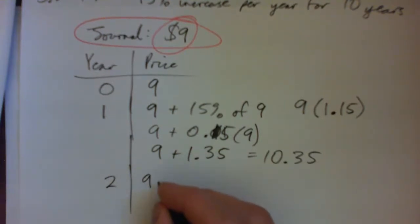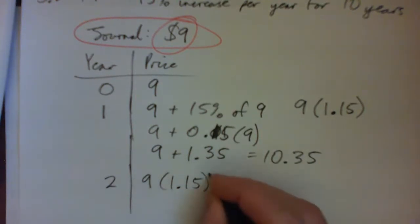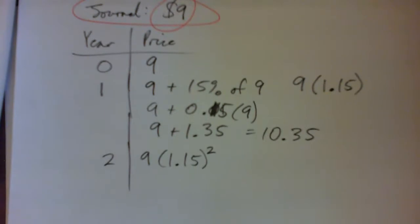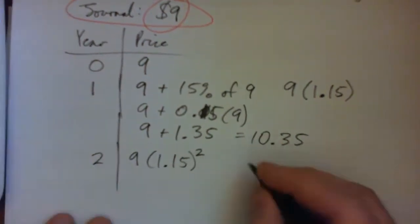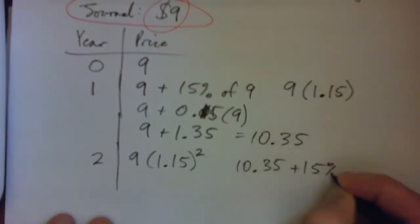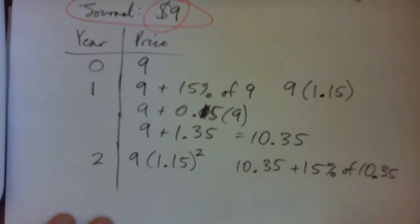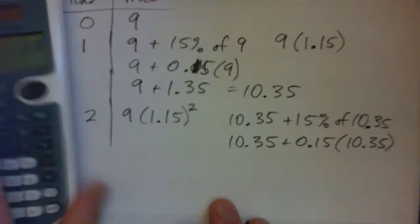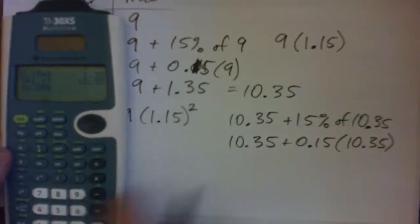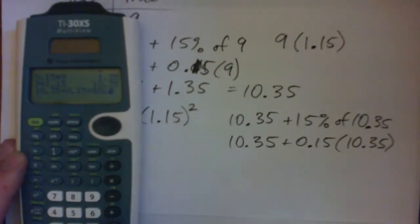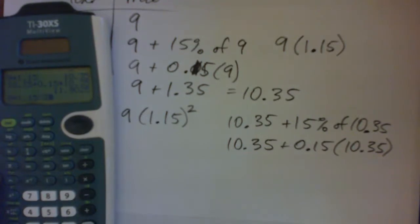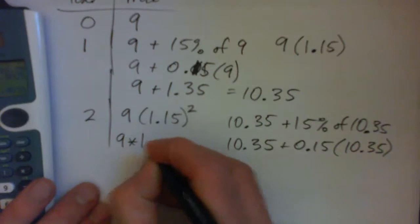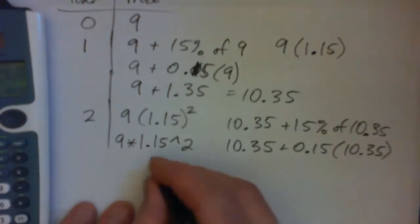After two years, can't we do nine times 1.15 squared? That's the same as taking $10.35 and adding another 15% — 10.35 plus 0.15 times 10.35. In a calculator, nine times 1.15 to the power of two gives us $11.90.